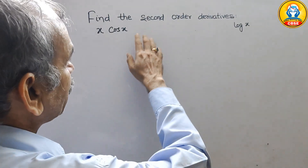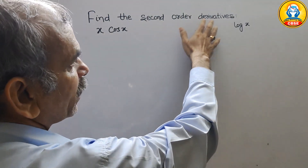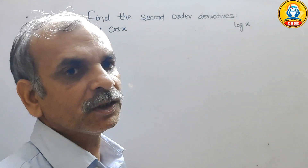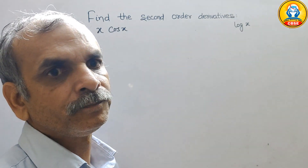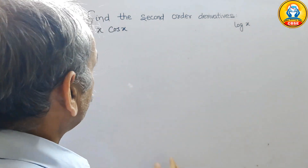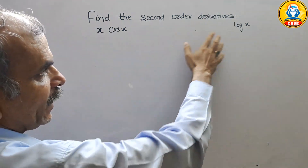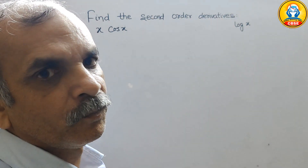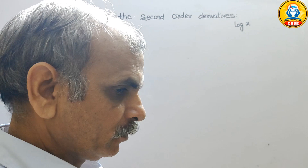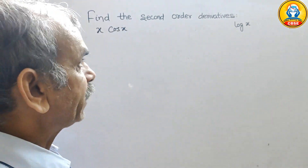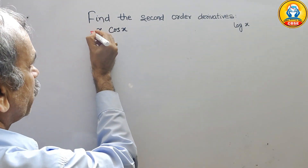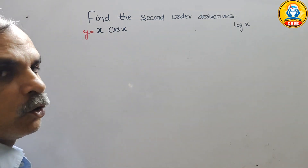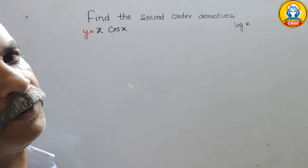Your question is to find the second order derivative, which means we have to go for double differentiation. Here they have given x cos x, and second they have given log x. We will take it as y, so first we will go for the first derivative.